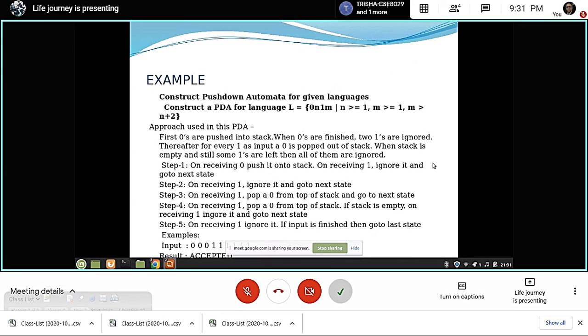Step 1: On receiving zero, push A into the stack. On receiving one, ignore it and go to next state. Step 2: On receiving one, just pop A from top of the stack and go to next state. Step 4: On receiving one, pop A or Z0 from top of the stack. If the stack is empty on receiving one, ignore it and go to next state. In state five, on receiving one, ignore it. If input is finished, then go to last state. To support our example, we have given some examples here below.